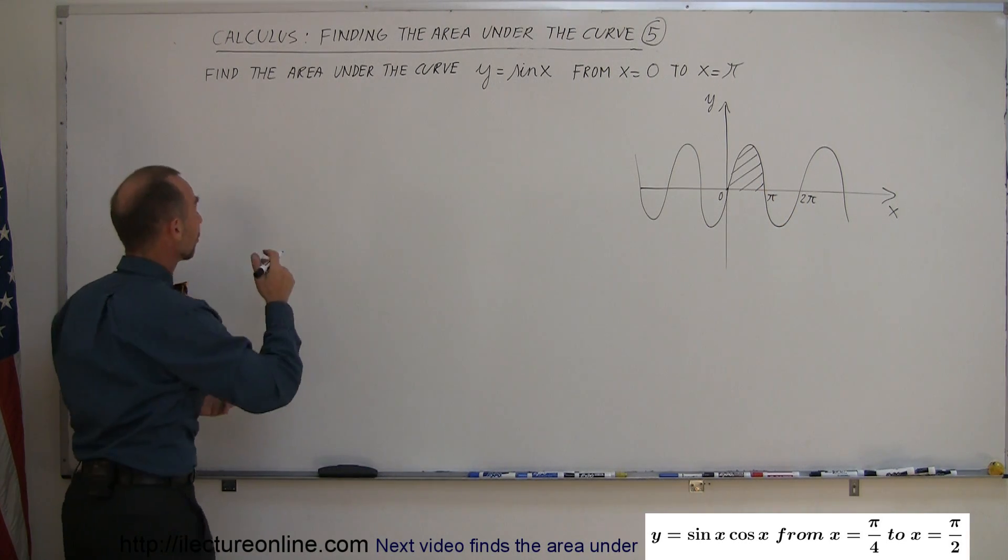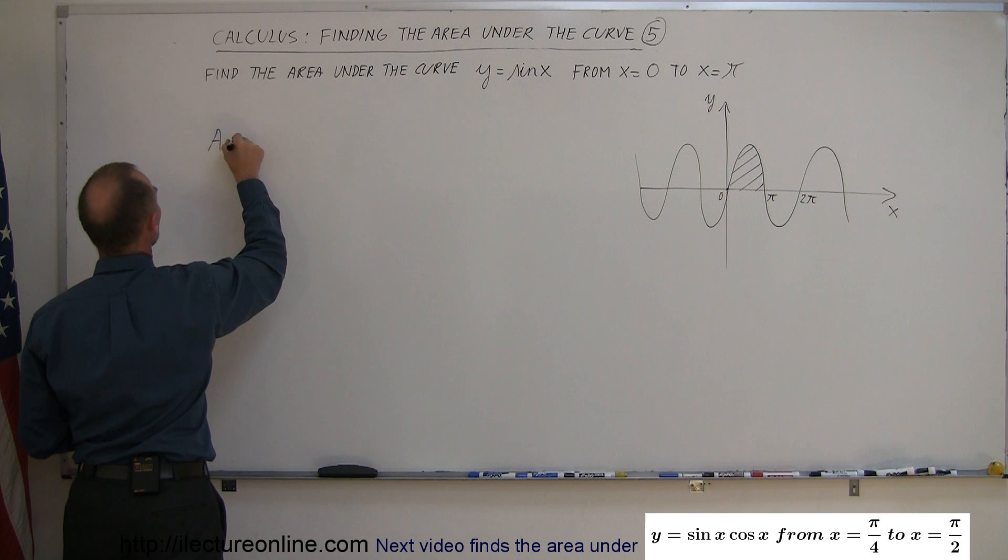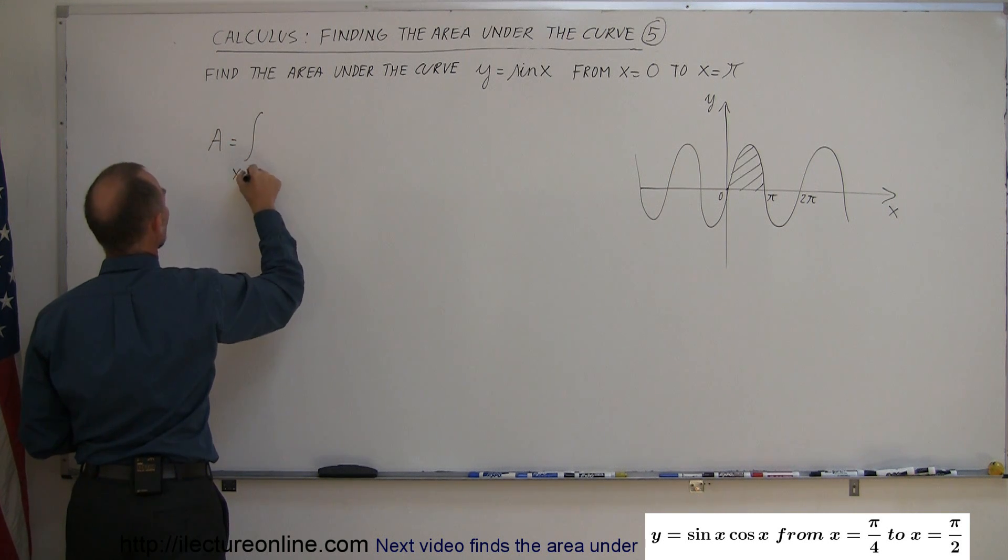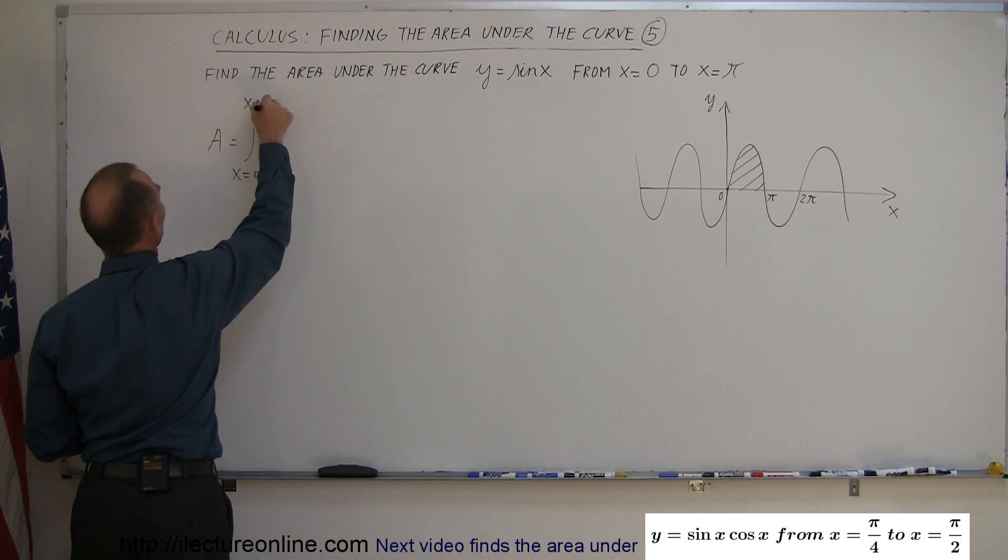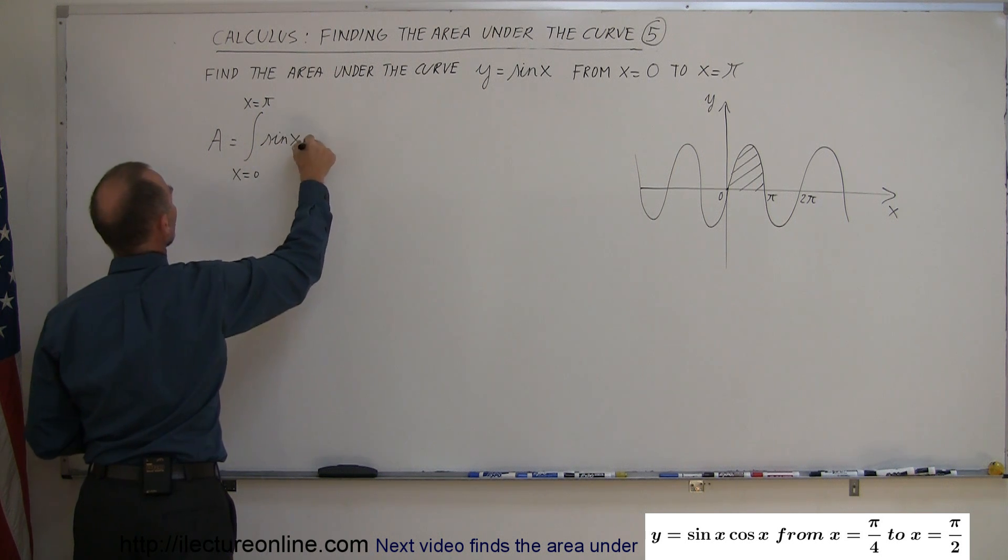How do we do that? We say that the area is equal to the definite integral from x equals 0 to x equals pi of the sine of x dx.